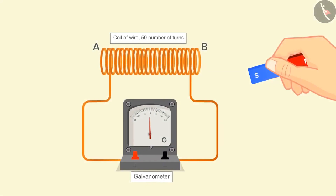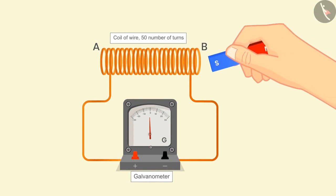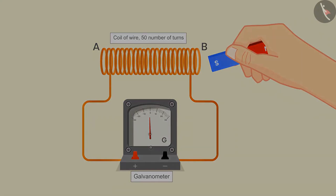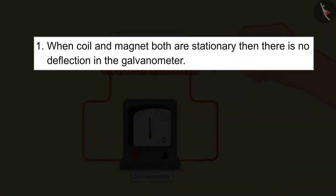In the third case, if we move the south pole of the magnet towards the coil, then the deflection will be opposite to what it was in case 1. So we can infer from this activity that when the coil and magnet both are stationary, there is no deflection in the galvanometer.